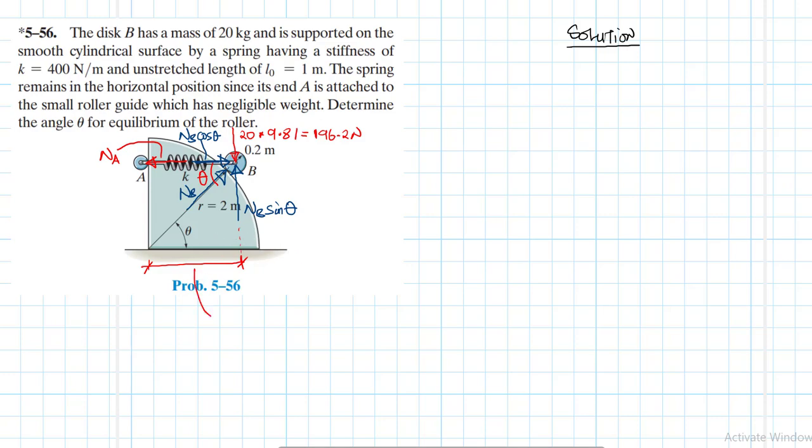The spring when it is in equilibrium, its horizontal length will be equal to 2.2 cos theta. This length here will be equal to 2 plus 0.2 cos theta, which becomes 2.2 cos theta. This becomes the final length of the spring when the system is in equilibrium.